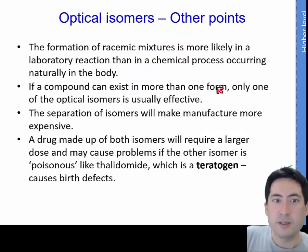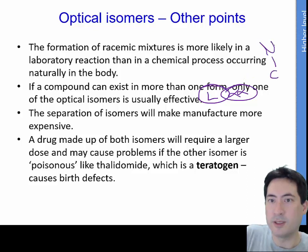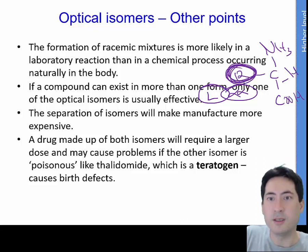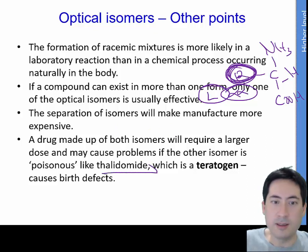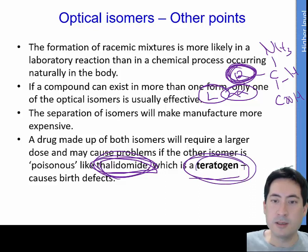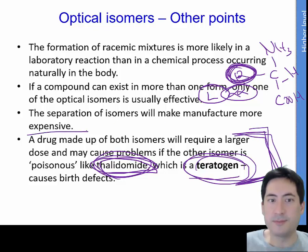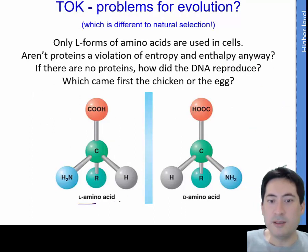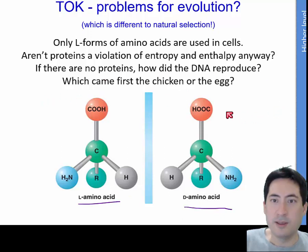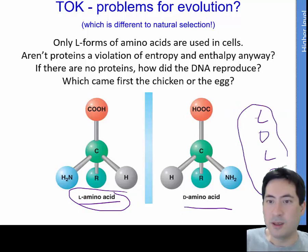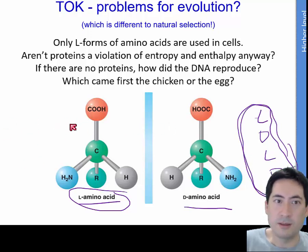As for relevance: in nature, only one form is usually useful — specifically the L amino acids. The general structure of an amino acid has a chiral carbon with a carboxylic acid group and a variable R group. This is important for drugs — a famous example is thalidomide, where one form was therapeutic and the other caused birth defects, making it a teratogen. These enantiomers need to be separated, which is also expensive. A TOK point worth discussing: if reactions produce L's and D's randomly, why are all naturally occurring amino acids L? That's an unusual and interesting question.